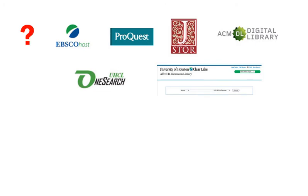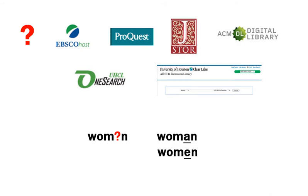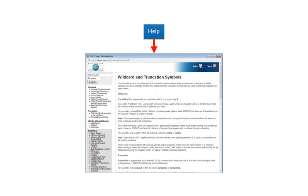Most databases, OneSearch, and the library catalog also use the question mark to take the place of a single character. WOM?N, for example, finds woman or women. See on-screen help for more information about valid wildcards in a specific resource.